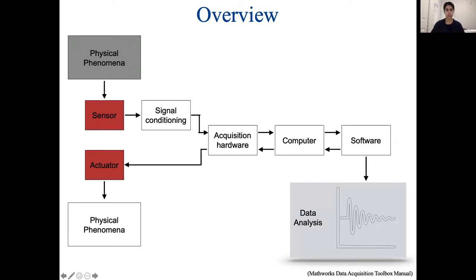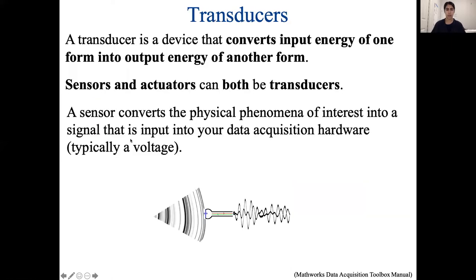Sensors and actuators have something in common: they are both transducers. A transducer is a device that converts input energy of one form into output energy of another form. Sensors and actuators are both transducers but they're just the reverse of each other. Interestingly, Steve Jobs actually changed the transducers in the speakers around his house so he could use them as microphones. The sensor converts the physical phenomenon into a signal that we bring into the hardware. Examples of sensors include accelerometers, thermometers, strain gauges, and microphones.